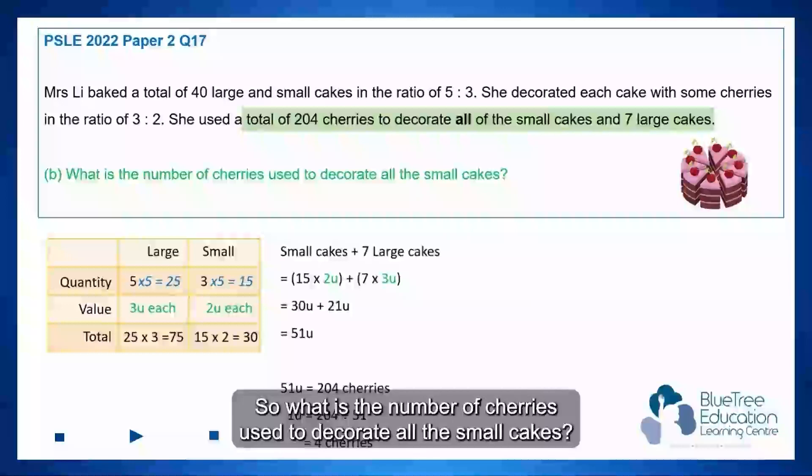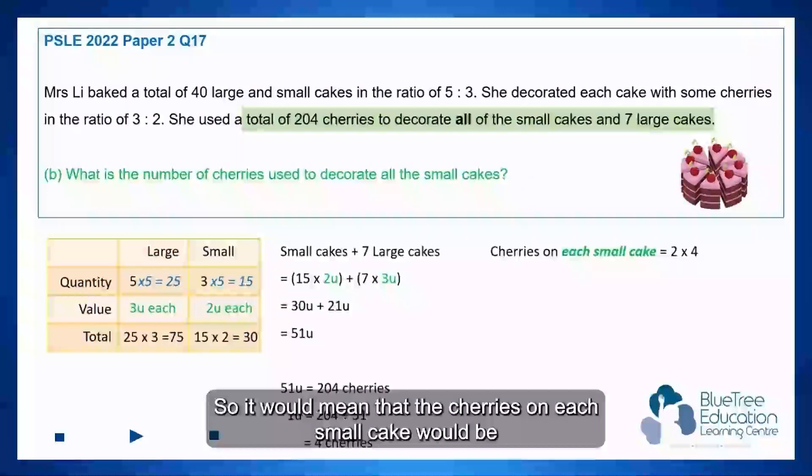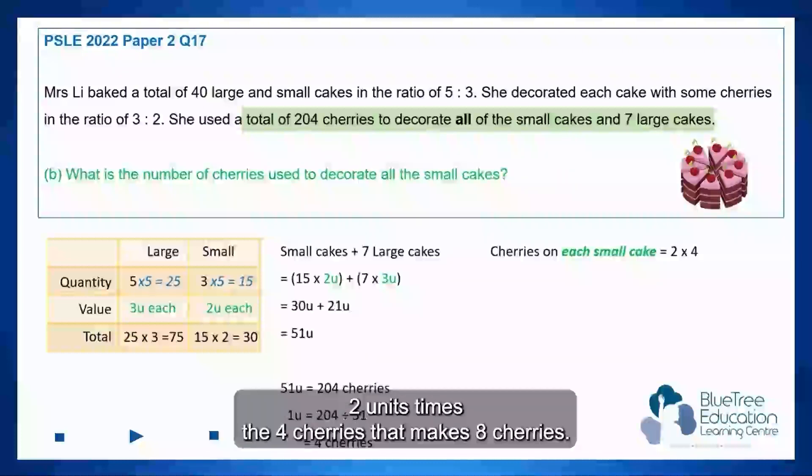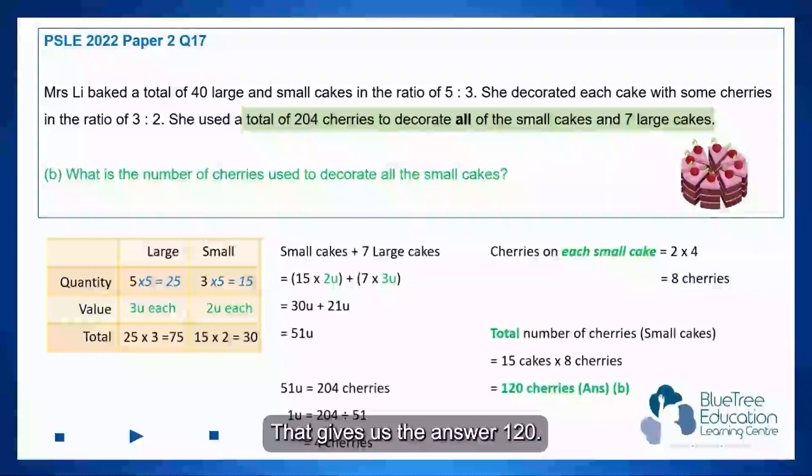So what is the number of cherries used to decorate all the small cakes? Take note of the keyword, small cakes. So it will mean that the cherries on each small cake would be 2 units times the 4 cherries, that makes 8 cherries. The total number of cherries will be 15 cakes times 8, that gives us the answer 120.